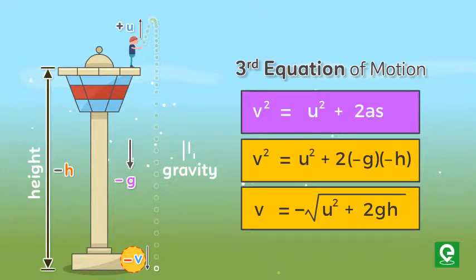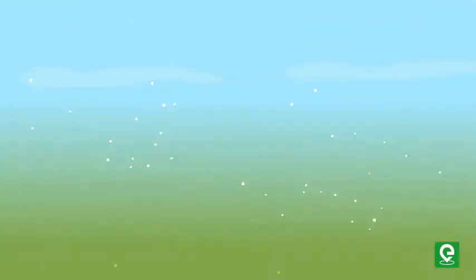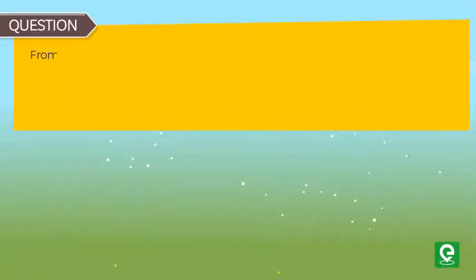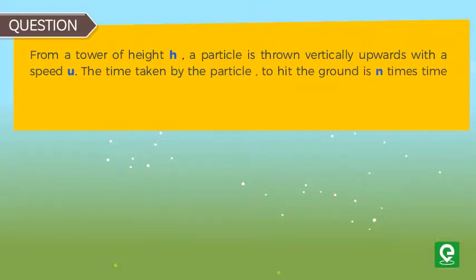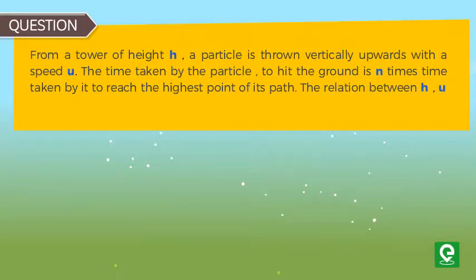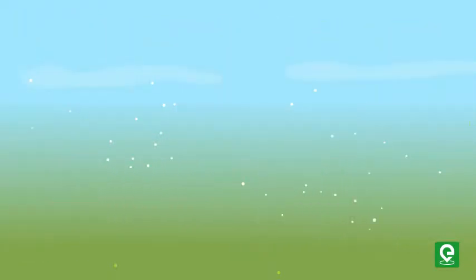Let's solve a problem based on this concept. Question: From a tower of height h, a particle is thrown vertically upwards with a speed u. The time taken by the particle to hit the ground is n times taken by it to reach the highest point of its path. The relation between h, u, and n is... here the options are. This question was asked in JEE Main 2014 exam.